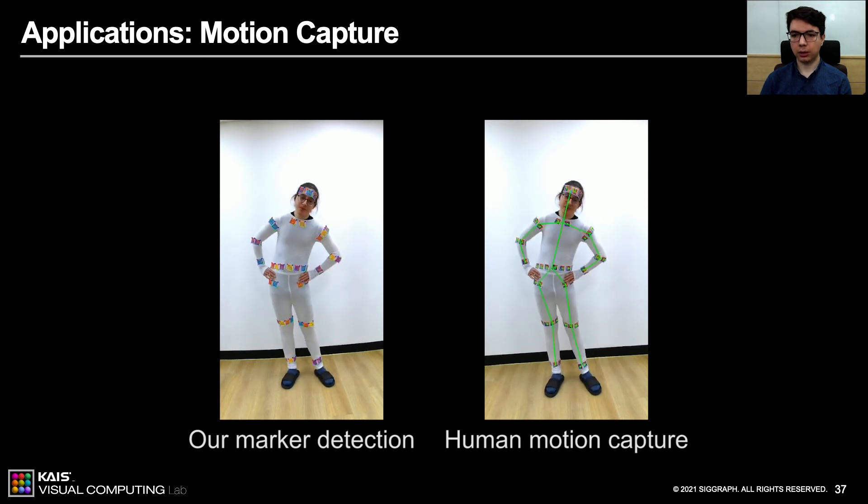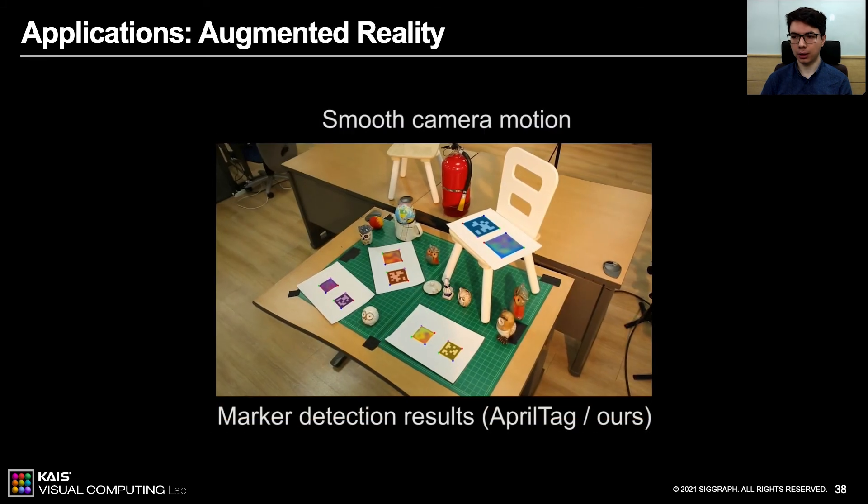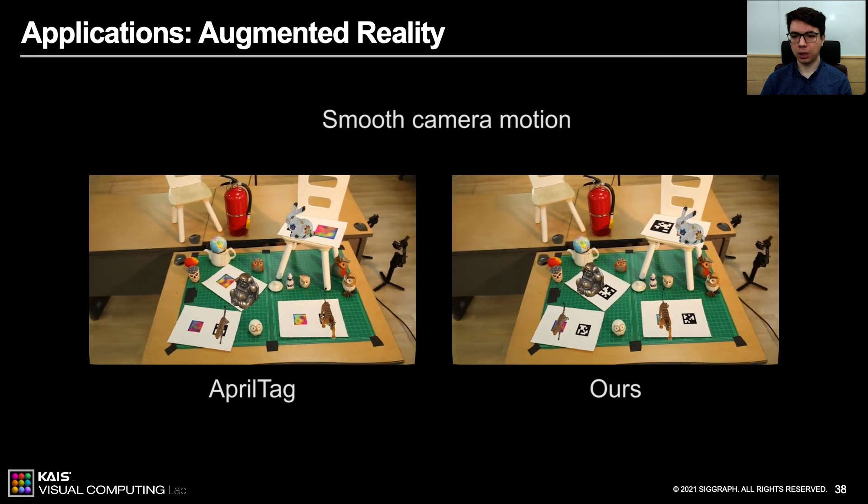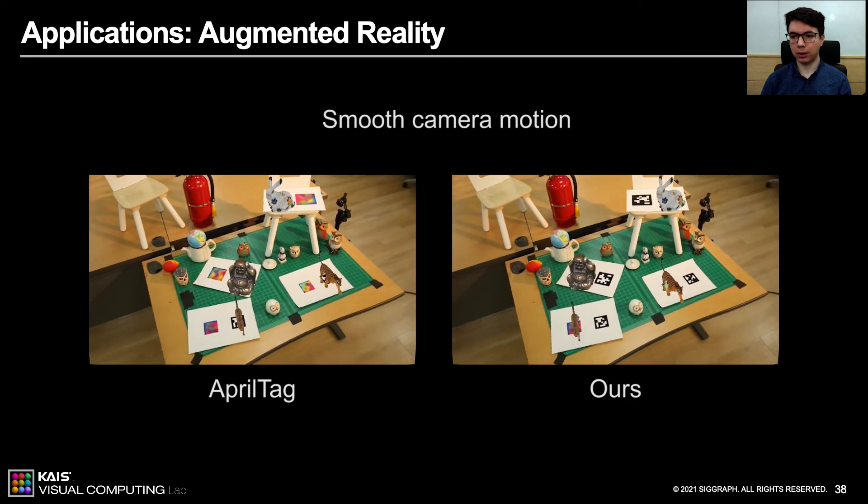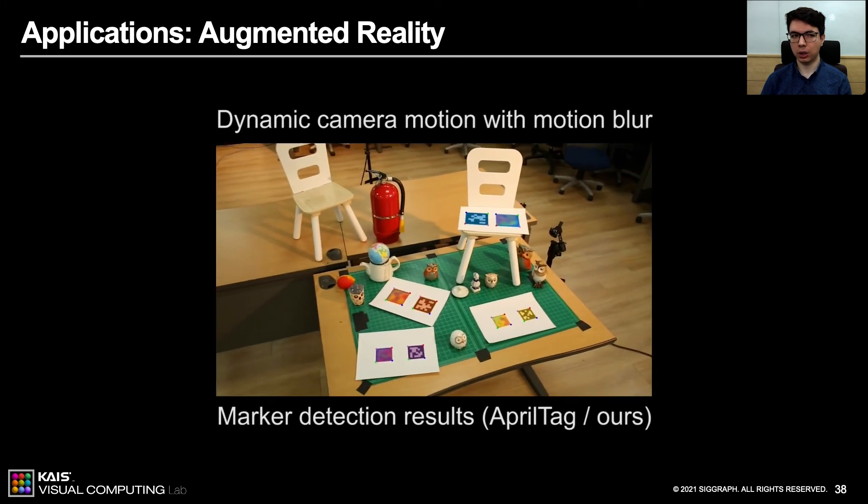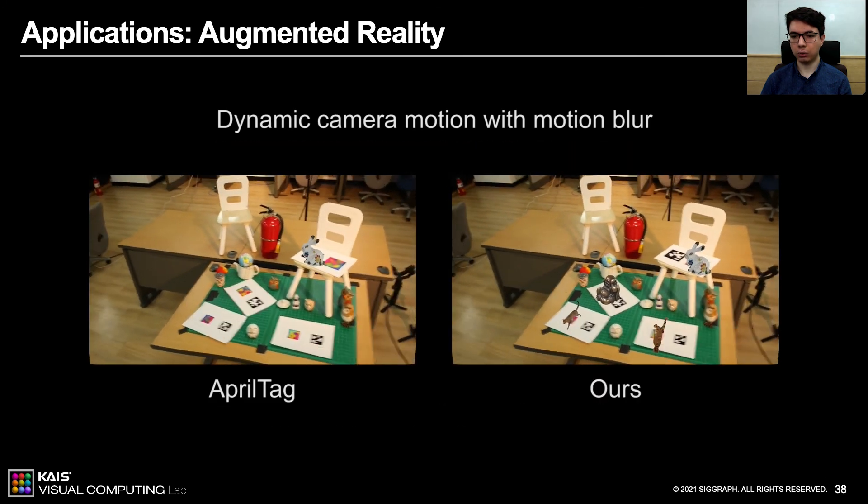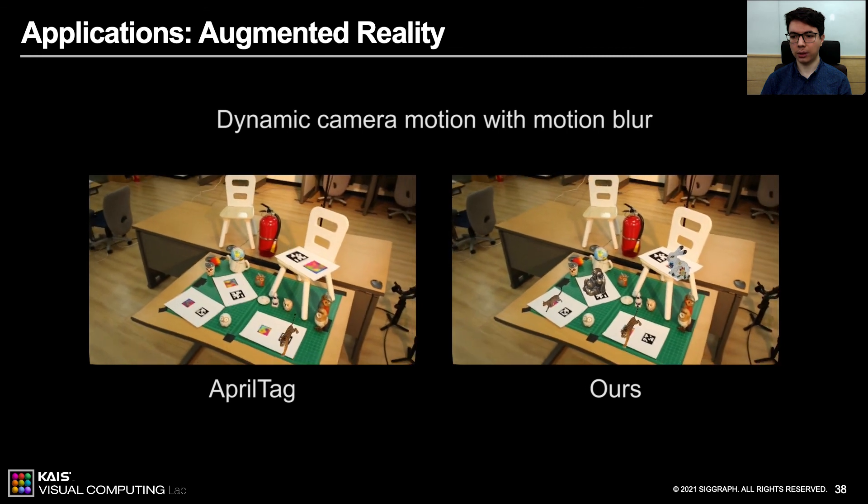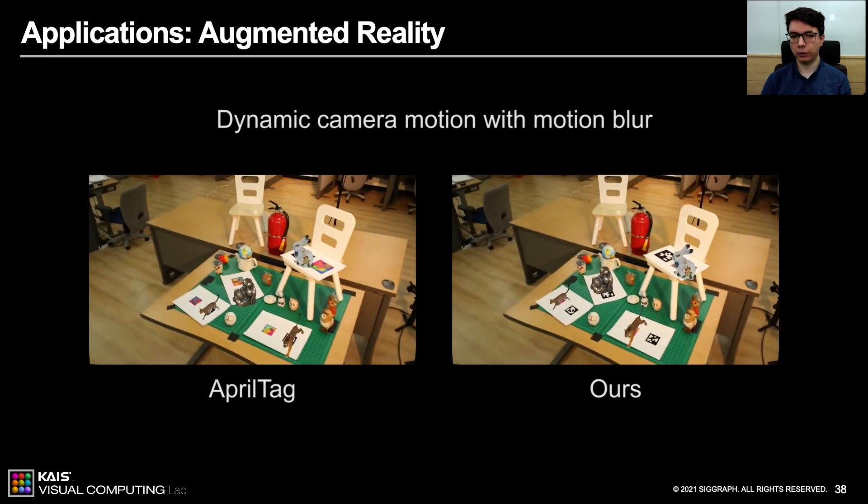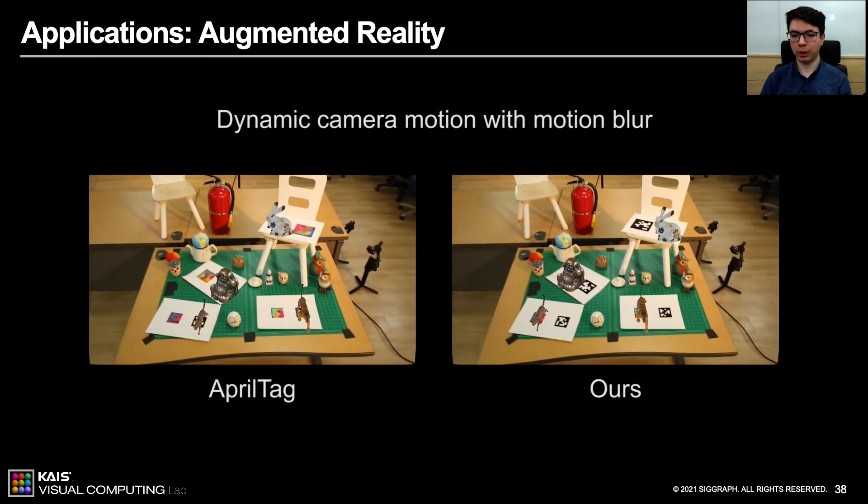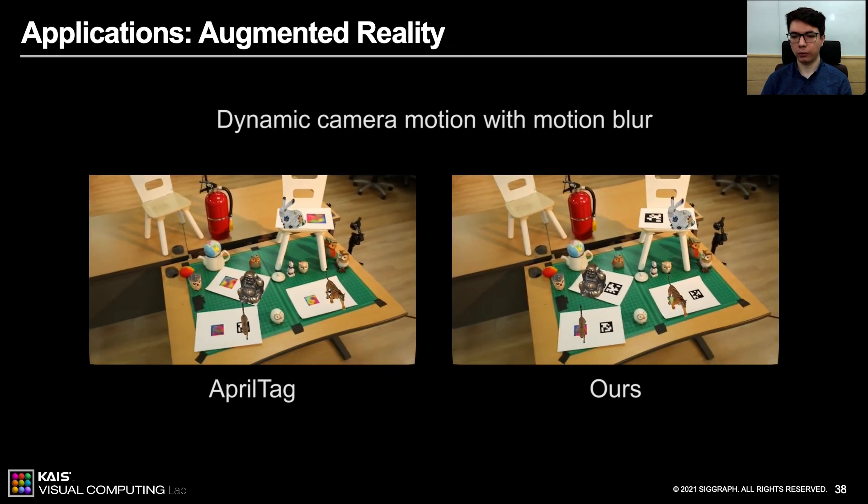When the fiducial marker sizes and camera intrinsic parameters are known, relative marker pose can be estimated. While this application is already allowed by existing markers, they fail under extreme imaging conditions. Especially in the video setting, where the camera and markers are moving with changing illumination, our method provides robust detection of the markers over video frames. In the presence of motion blur, the virtual object is placed more reliably, thanks to robust detection performance of our method.